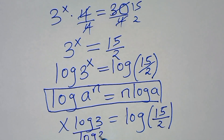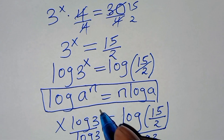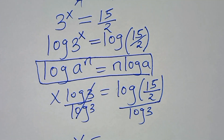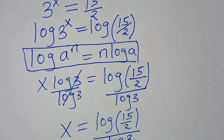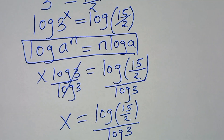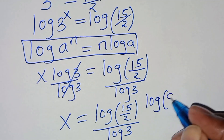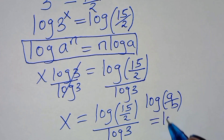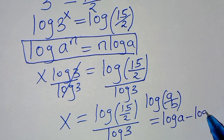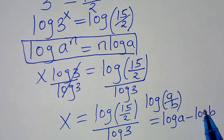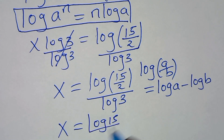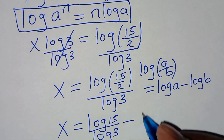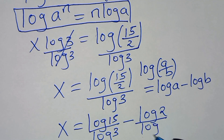Let's divide both sides by log 3, so that now x is equal to log(15/2) divided by log 3. Now log(15/2) is essentially in the form of log(a/b), which we can express as log a minus log b. So x is equal to log 15 divided by log 3, subtract log 2 divided by log 3.